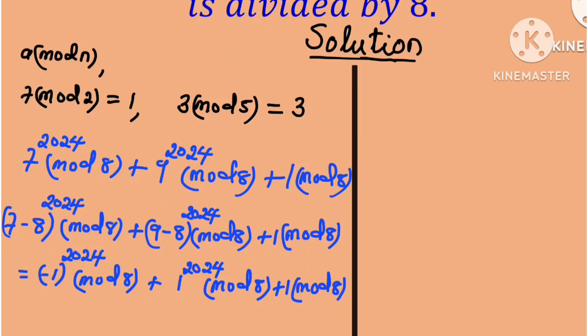We know negative 1 raised to any even number is equal to 1. And so this is equal to 1 mod 8 plus 1 mod 8 plus 1 mod 8.